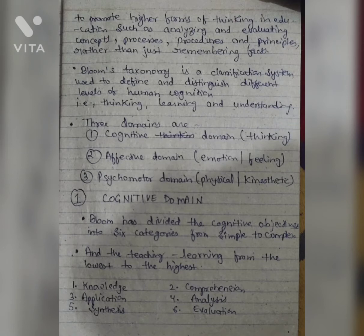Cognitive Domain. Bloom has divided the cognitive objective into six categories from simple to complex, and the teacher learning from the lowest to the highest: Knowledge, Comprehension, Application, Analysis, Synthesis, and Evaluation.